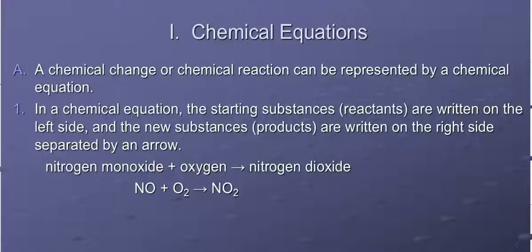You can write two types of equations. You can write a word equation, like nitrogen monoxide plus oxygen forms nitrogen dioxide, or you can write a chemical equation which shows these symbols, like NO plus O2 forms NO2.